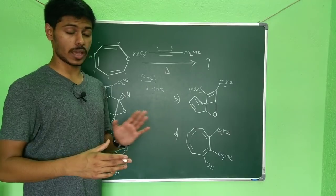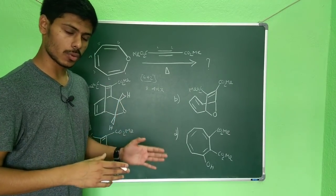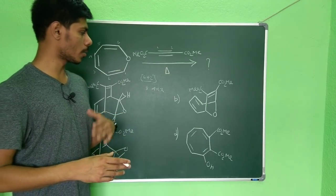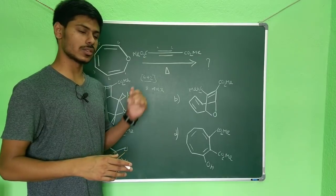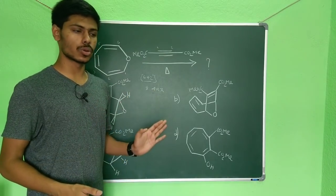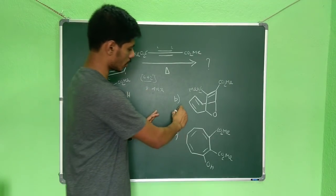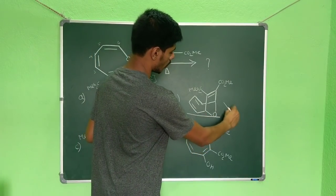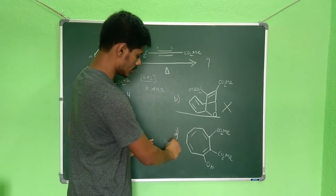If it is a 4n pi electron, that means the suprafacial reaction is not allowed. I cannot say disfavored—it is not allowed by the Woodward-Hoffman rule. If Woodward-Hoffman rule doesn't permit this 4n pi electron in suprafacial manner, then it should go in the antifacial pathway.